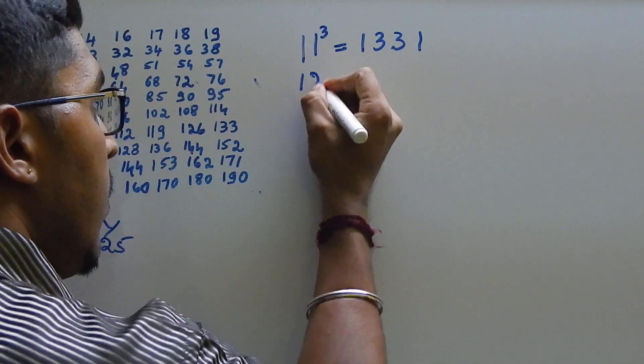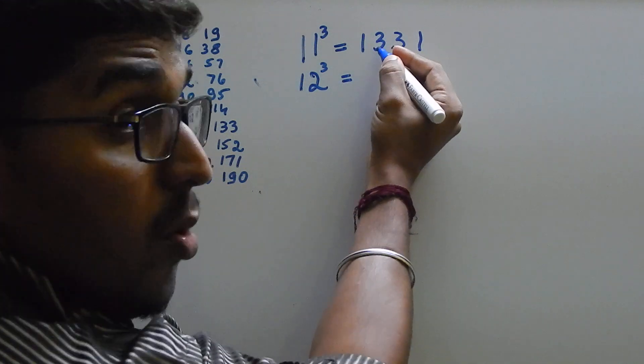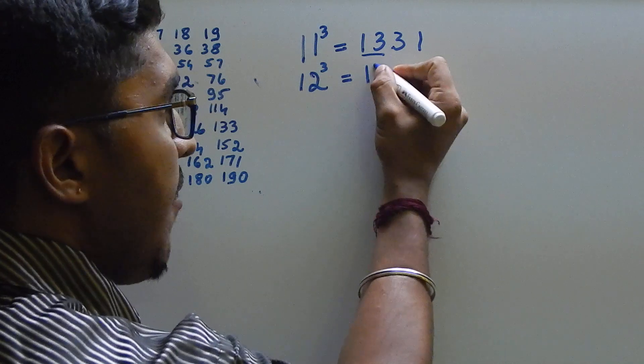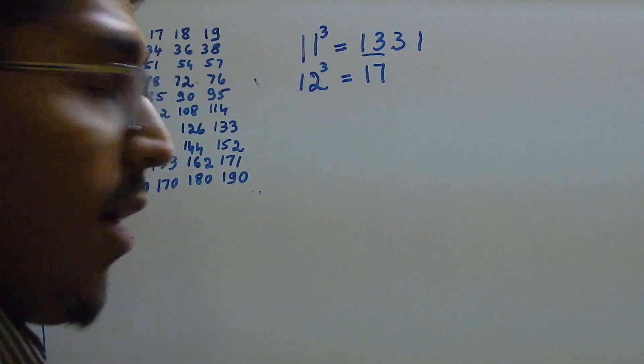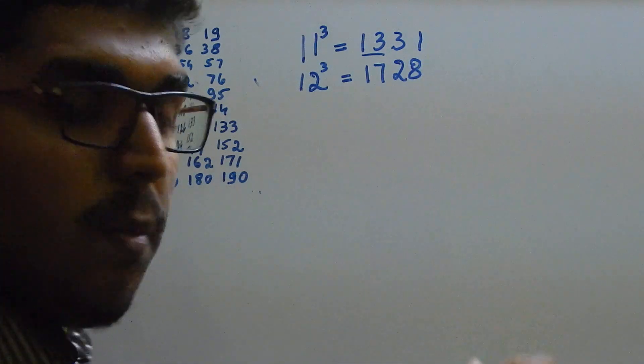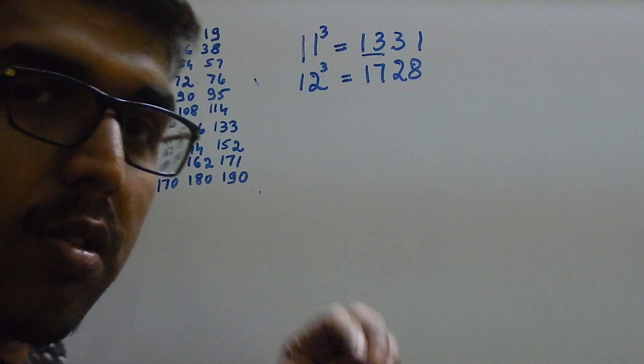Next, 12 cube. How we write 12 cube? Add 4 to 13. Add 4 to 13. If we add 4 to 13, it will be 17. 17. Then, 28. There is no perfect logic to remember this. You should remember using your own tricks.